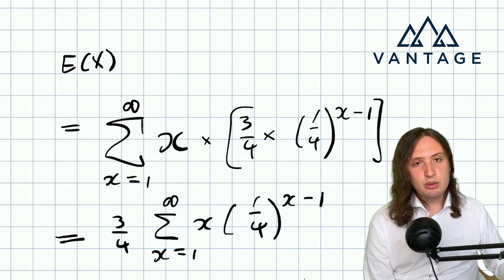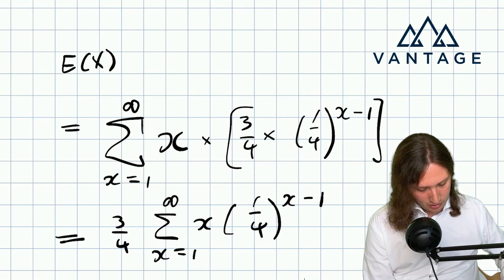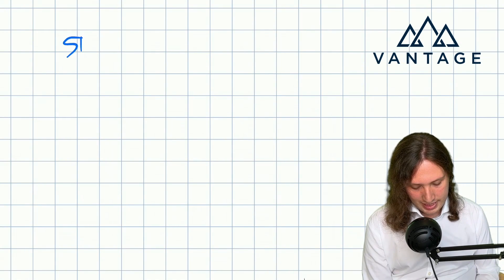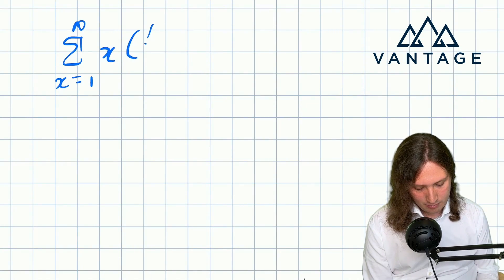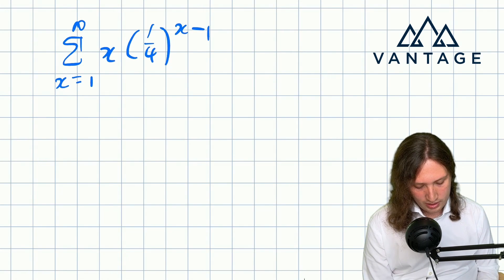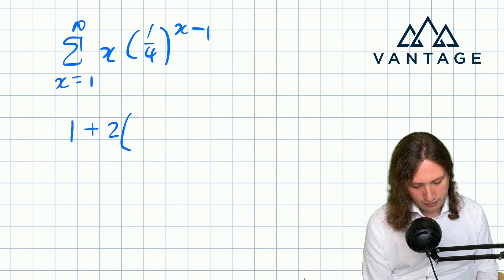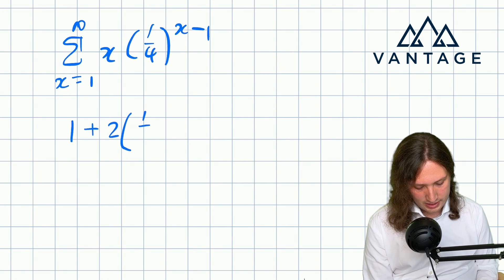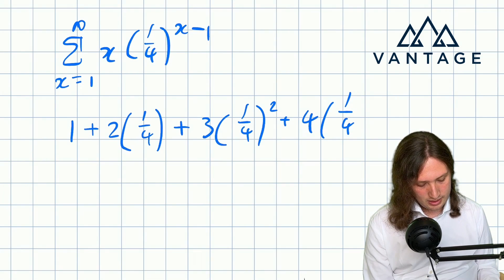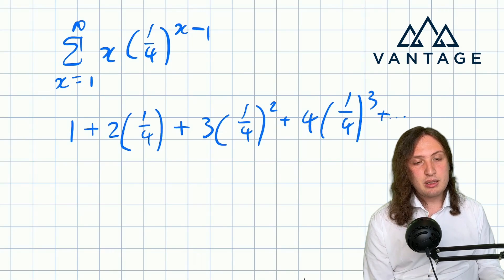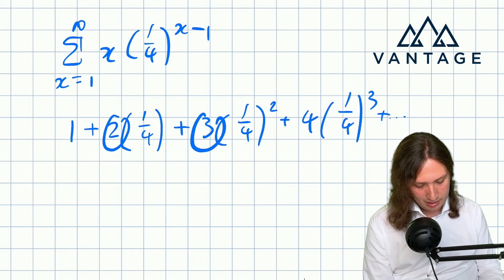So something that can really help when you've got a series in sigma notation is to write the thing out explicitly. Sigma notation is a very useful tool for capturing an infinite or very long sum without taking up loads of ink, but it can obscure what's going on. So if I just briefly ignore the three quarters, let's just write this thing explicitly to see what we're really dealing with. So what we're dealing with is x times a quarter to the x minus one. So that's one lot of a quarter to the zero, which is one, and then I get two lots of a quarter to the one, so that's the x equals two case, three lots of a quarter squared, four lots of a quarter cubed, and so on. So it's a bit like a hybrid between a geometric series with the power going up and an arithmetic series with the number going up.